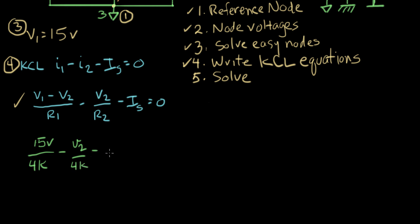In this expression here, we still have V2 unknown over 2k. And I_S, let's put I_S over on the other side. And I_S was 3 milliamps.